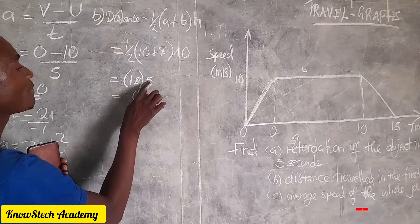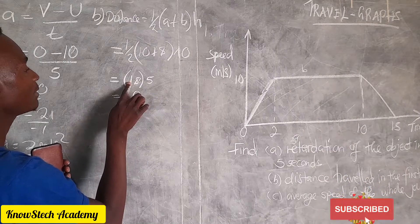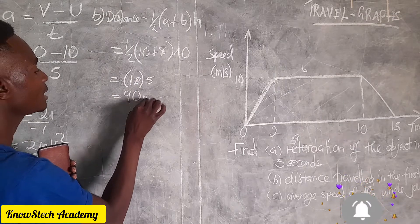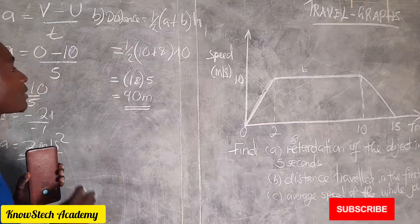Carry 4, 5 times 1 is 5 then plus 4 is 9. So this is 90 meters when you calculate the distance.